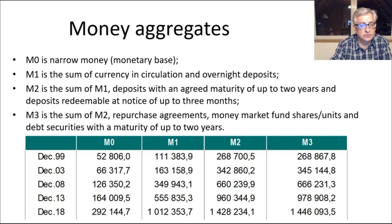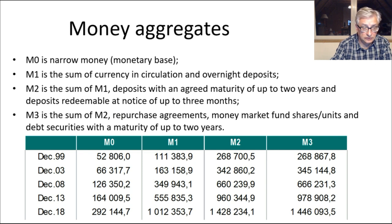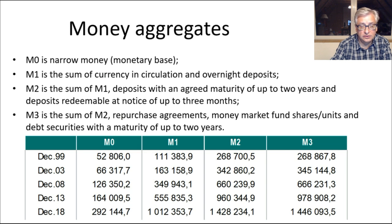M0 — called high-powered money or the monetary base — includes notes and coins in banks and in circulation outside banks, as well as commercial bank deposits held with the National Bank of Poland. M1 consists of notes and coins in circulation outside banks plus current deposits — also known as transactional money — the aggregate that allows financing everyday transactions through debit cards, credit cards, and bank transfers.